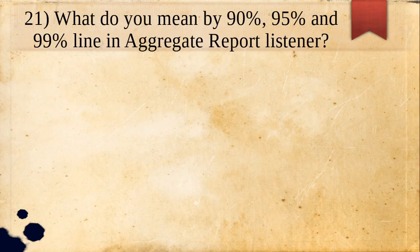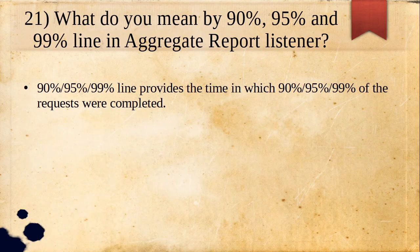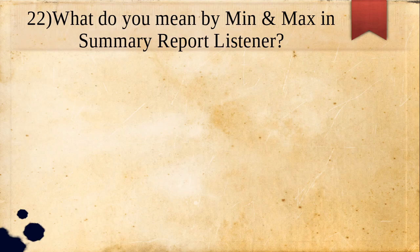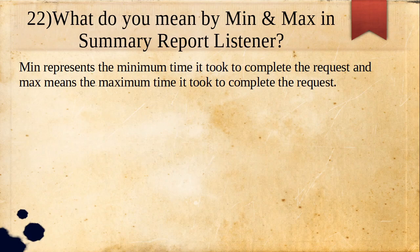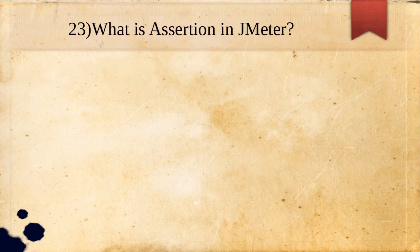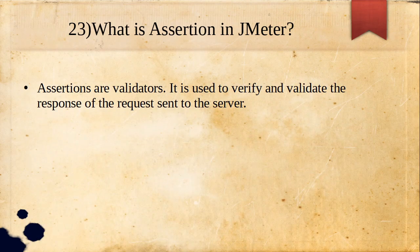In the Aggregate Report listener, what do 90%, 95%, and 99% lines mean? The 90% line means that 90% of requests were completed within that time — similarly for 95% and 99%. What do min and max mean in the Summary Report listener? Min represents the minimum time taken to complete a request, and max represents the maximum time taken to complete the request.